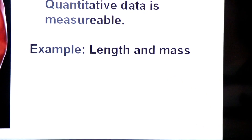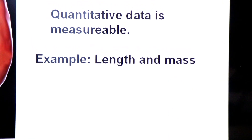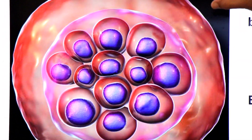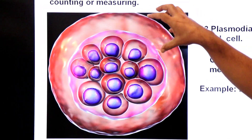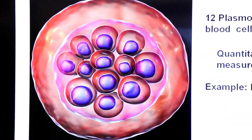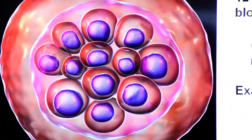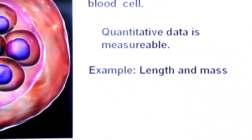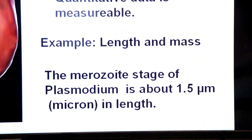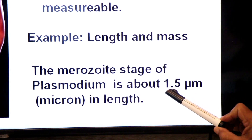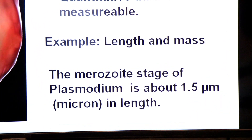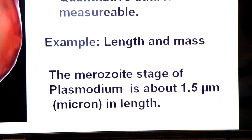For example, the structures found inside the RBC — the forms of plasmodium — are called merozoites. We can measure their length. The merozoite stage of plasmodium is about 1.5 microns in length. So this is an example of quantitative data.